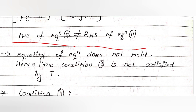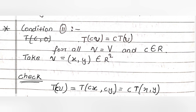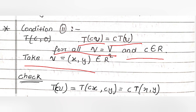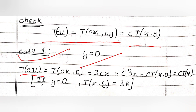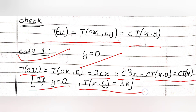Since LHS = 4 ≠ RHS = 7, the equality of Equation 2 does not hold, so Condition 1 is not satisfied by T. Now let's check Condition 2: T(cv) = c·T(v) for all v in V and c in R. Take v = (x, y) in R². We check T(cv) = T(cx, cy) equals c·T(x, y). Case 1: y = 0. T(cv) = T(cx, 0) = 3cx = c·3x = c·T(x, 0) = c·T(v).